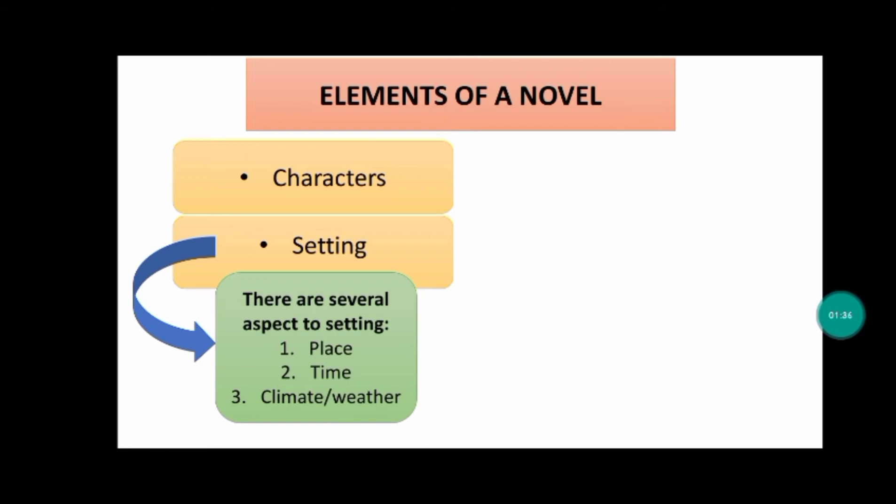Number two is time. First, this refers to the period of history if the story is set in the past. If the story could happen now or at some recent unspecified time, we say that it is contemporary. If it is a science fiction story, it may be set in the future. When describing setting, be as specific as the author is.